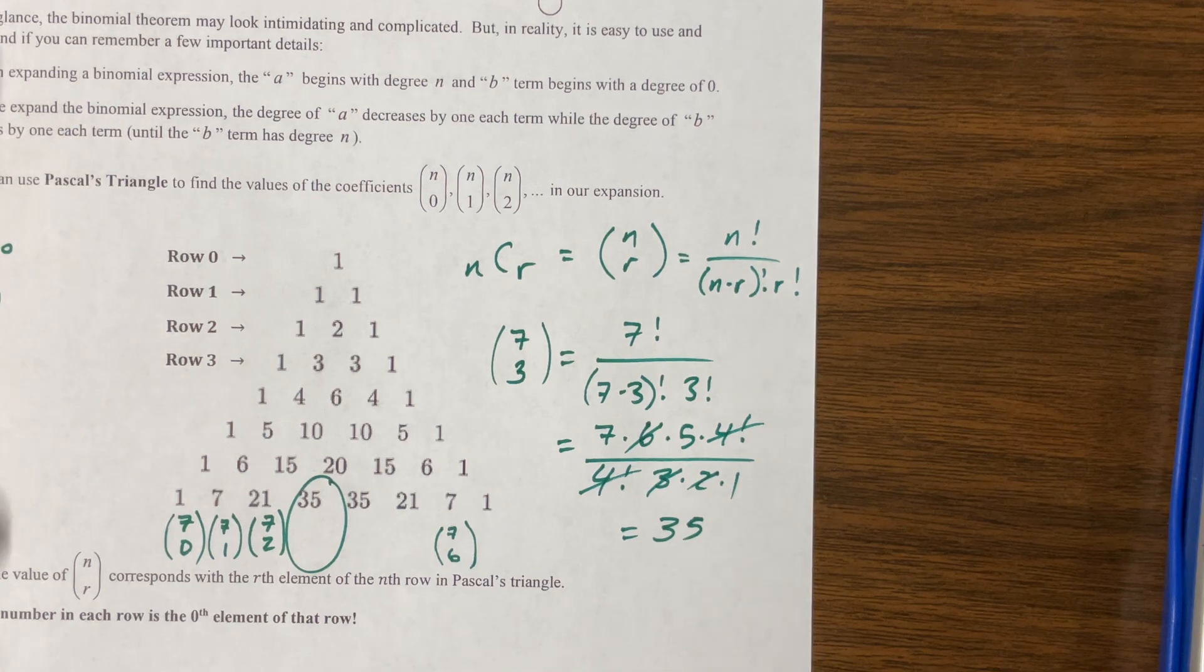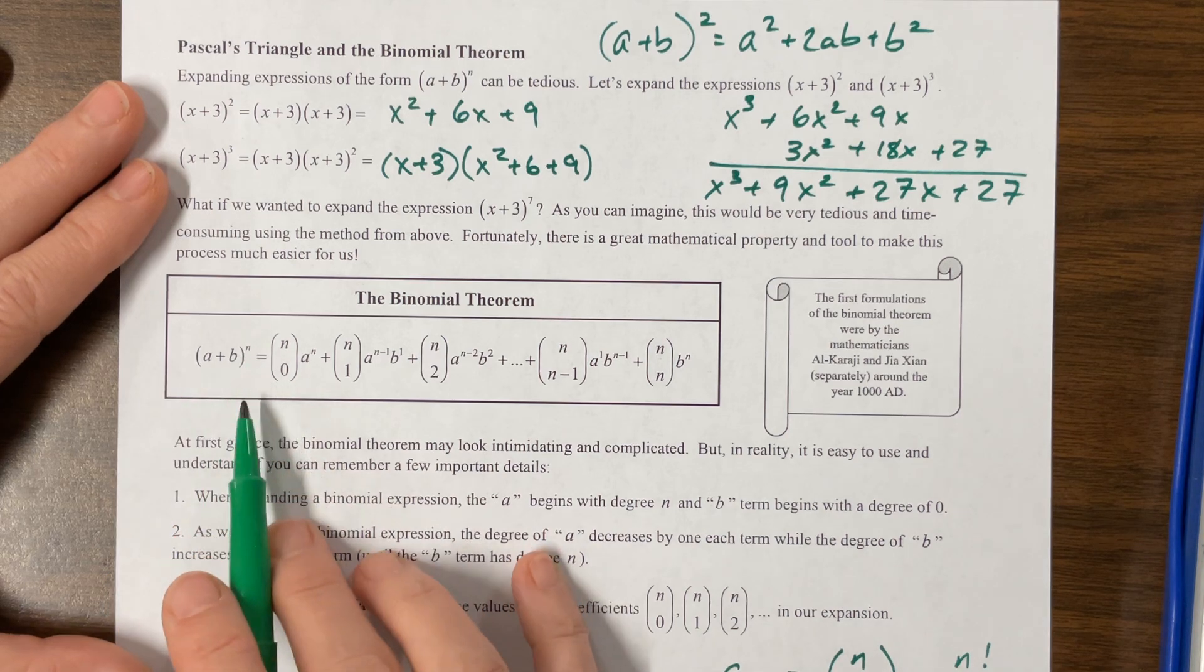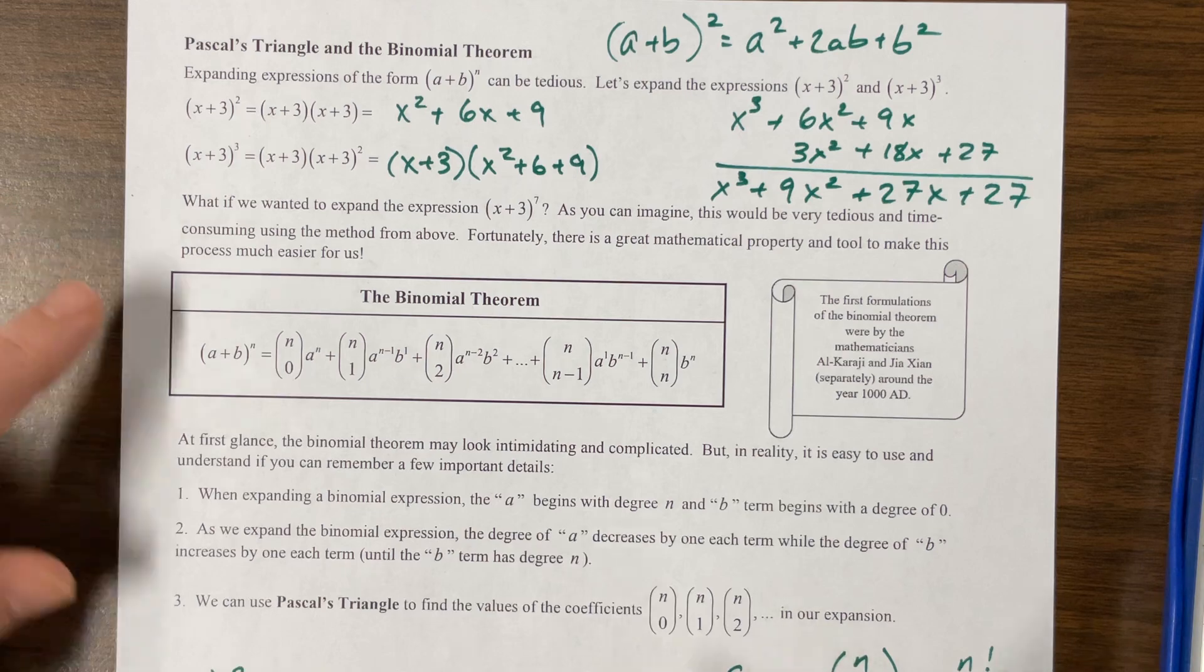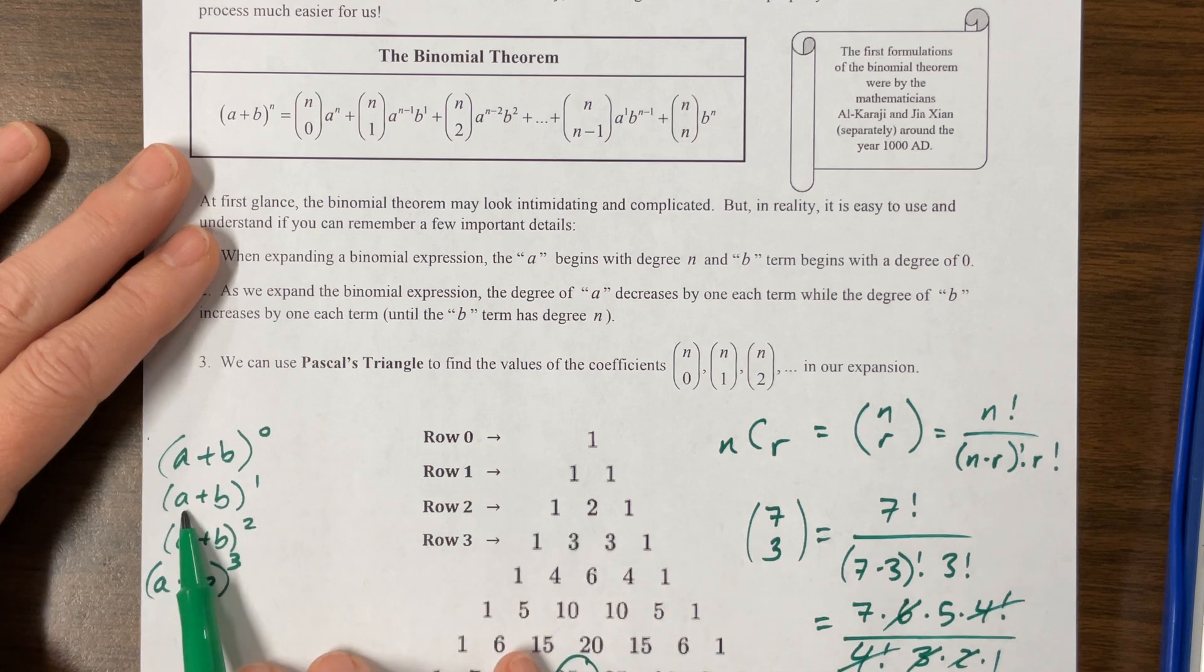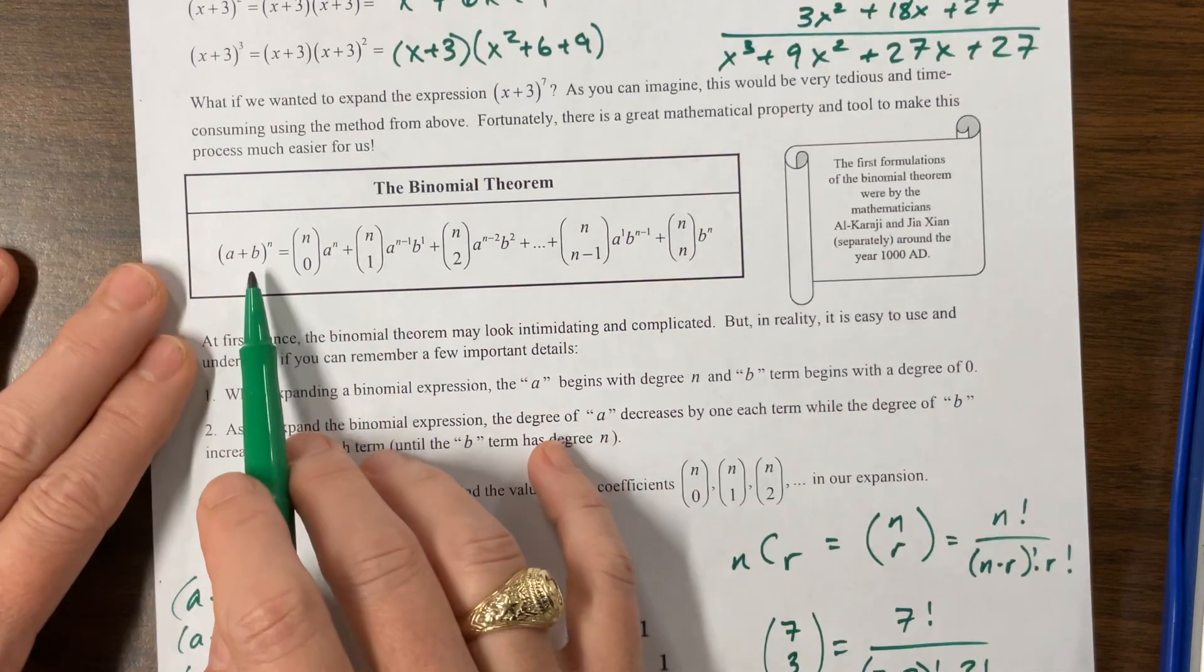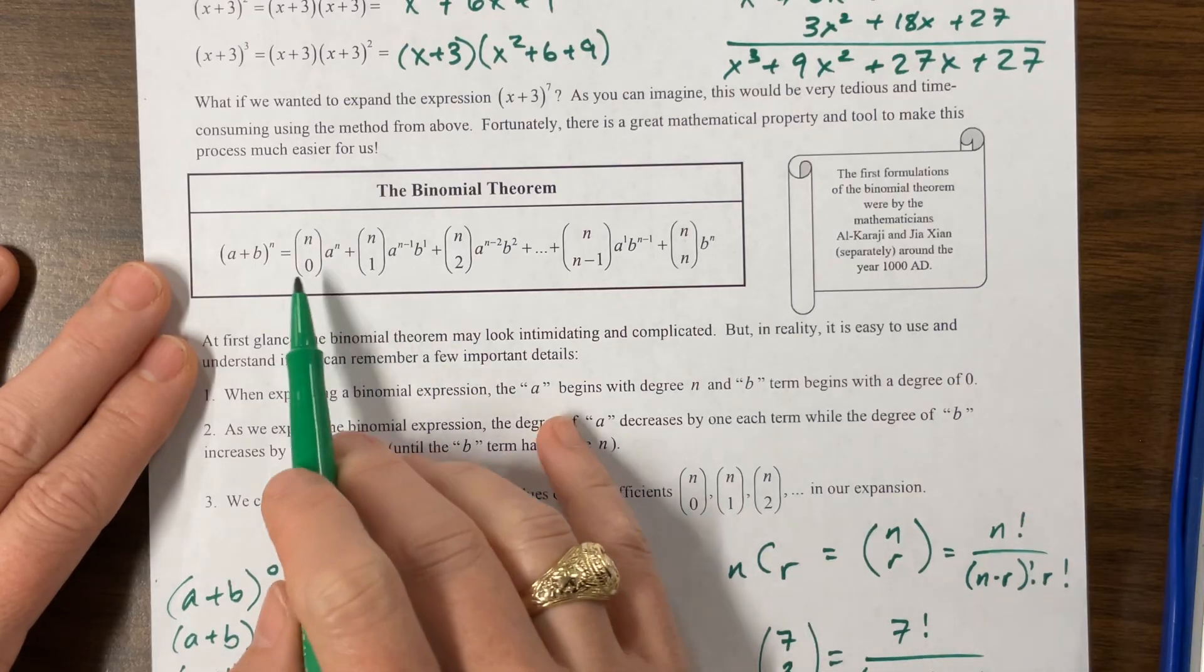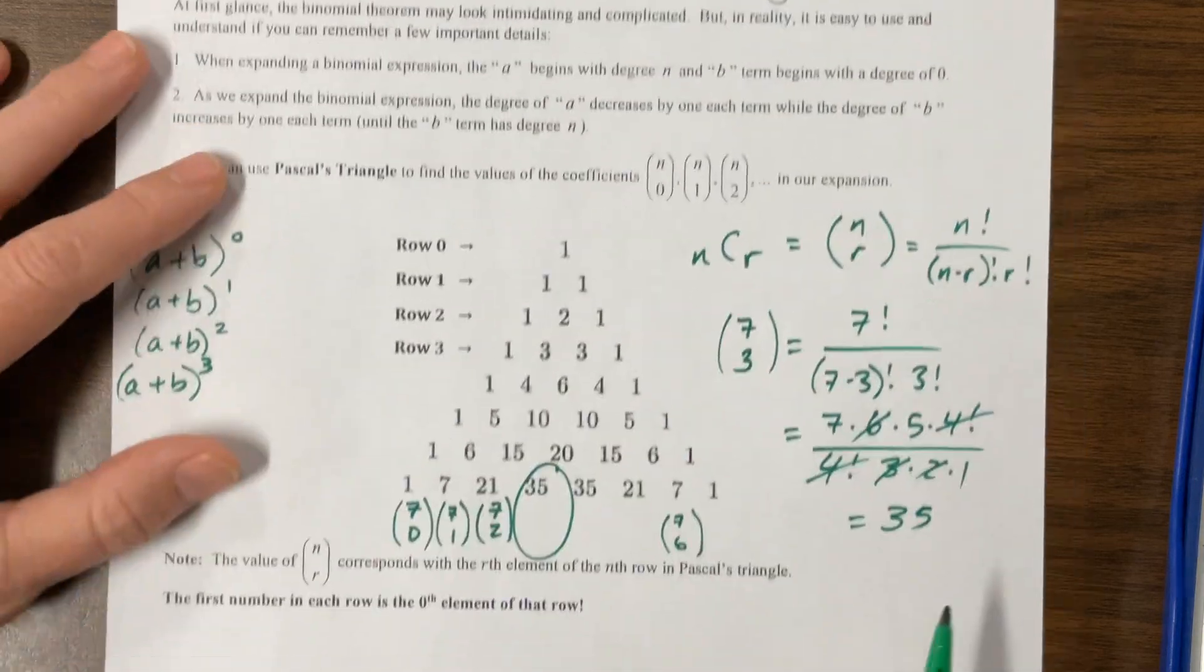But this is kind of annoying if we had to say I wanted to do x plus 3 to the 7th. That would be a little tedious. So we have the binomial theorem that allows us to do this a little more easily. And so what happens is, I kind of like the way that I teach this. What happens is that each term has three components. Each term has a coefficient out front that comes from Pascal's triangle.